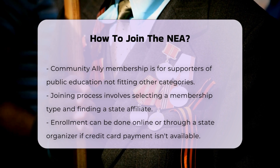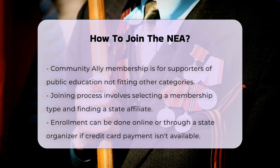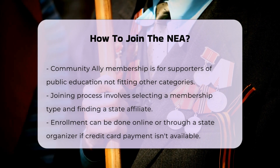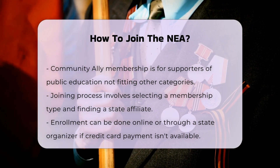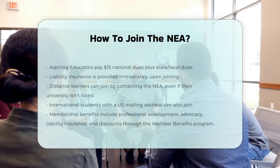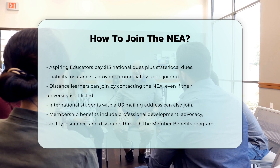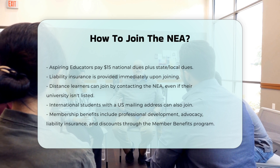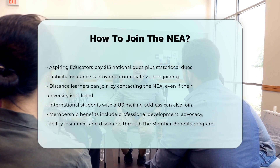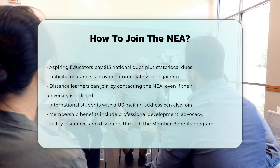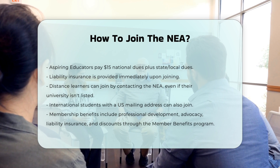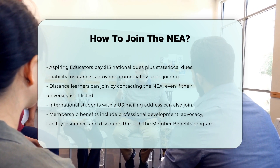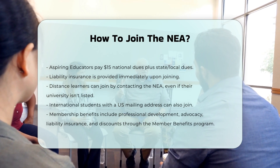Additional Considerations. Distance Learners: if you are a distance learner, you can still join by contacting the NEA and providing your details. For online-only universities not listed, you may join through the District of Columbia, D.C. International Students: you can join if you have a U.S. mailing address or a U.S. DOD APO-FPO address. Follow the specific formatting guidelines for these addresses.